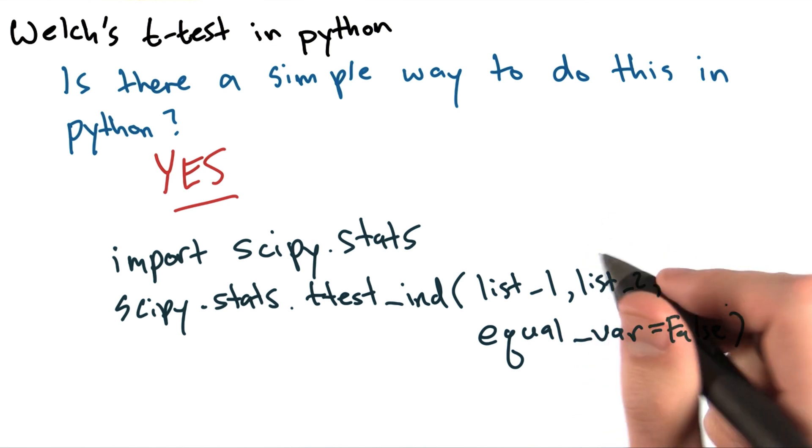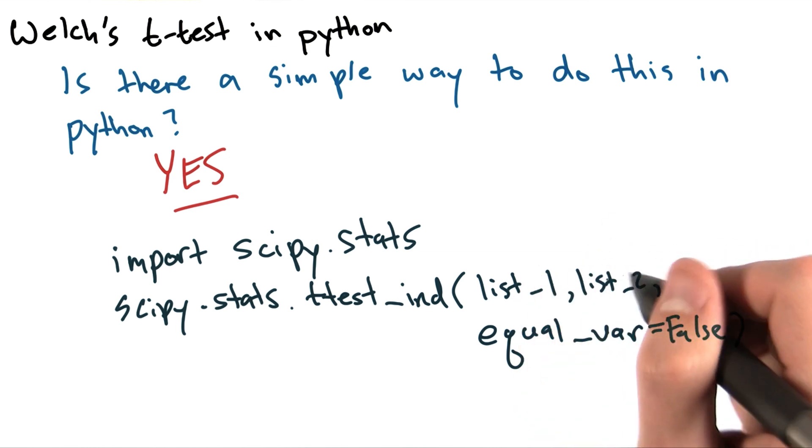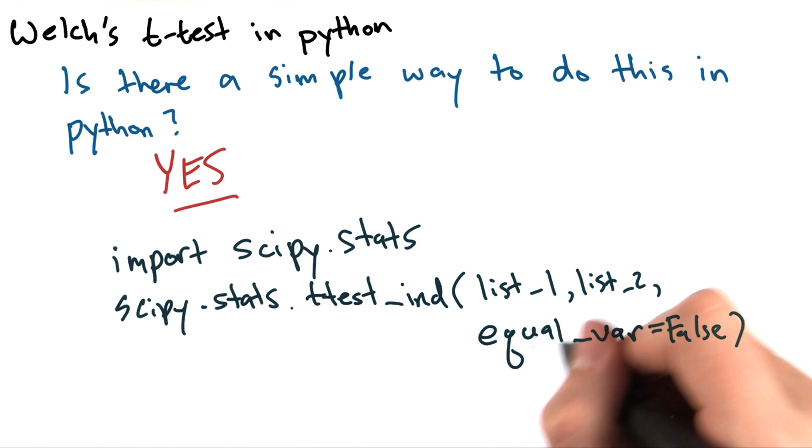And then supply as arguments two lists, which are your two sets of data, and then an optional argument, equal_var equals false.